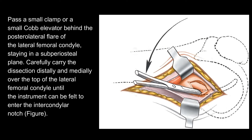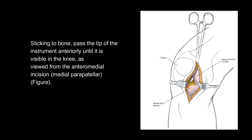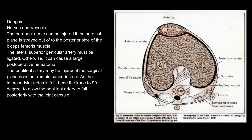Carefully carry the dissection distally and medially over the top of the lateral femoral condyle, sticking to bone, until the instrument can be felt to enter the intercondylar notch. Pass the tip of the instrument anteriorly until it is visible in the knee as viewed from the anteromedial incision.